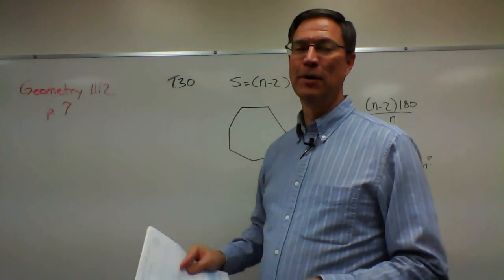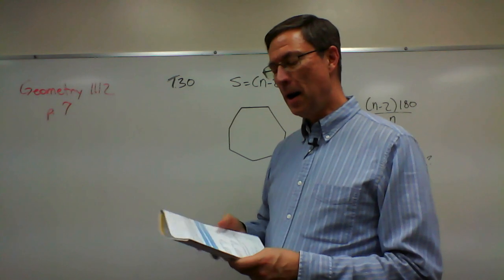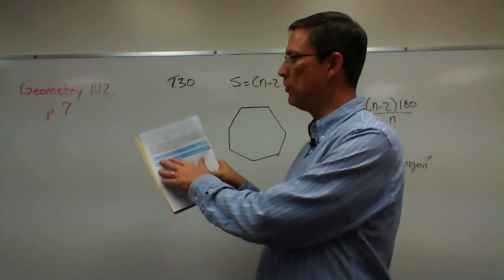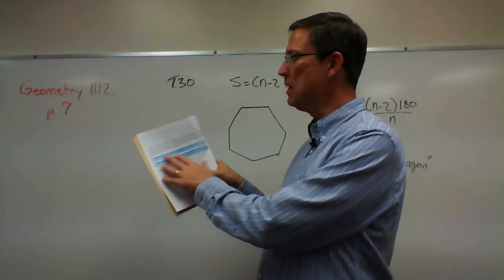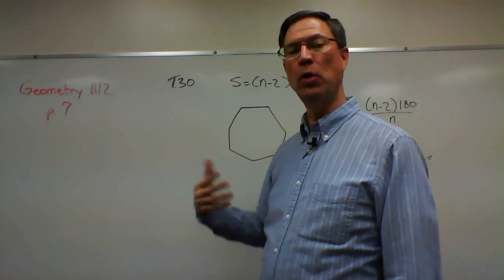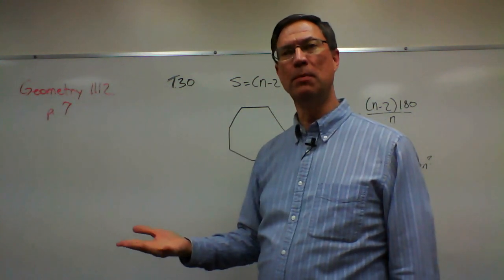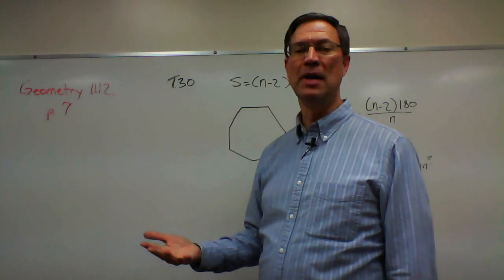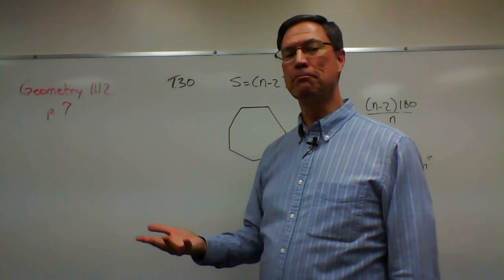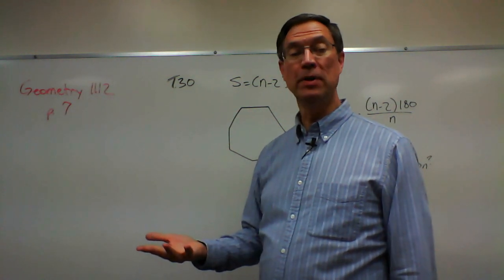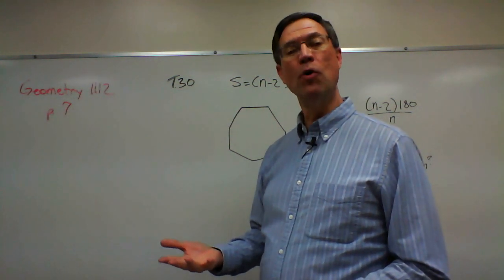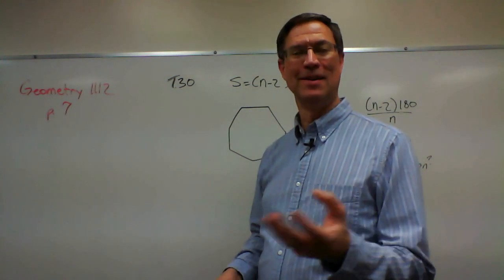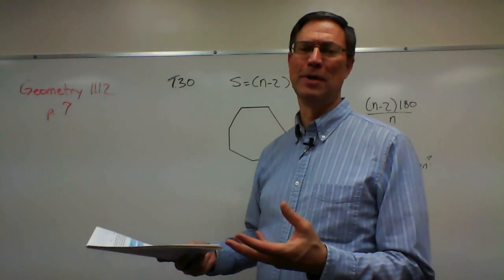Let's look at page seven here. There are two theorems in blue: Theorem 30 and then its corollary. Corollary means it's closely related to it, but in both of these cases it is a formula. So we're sticking a little bit of algebra in with the geometry.